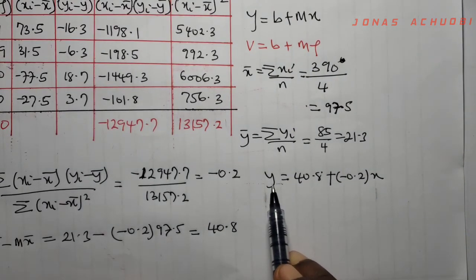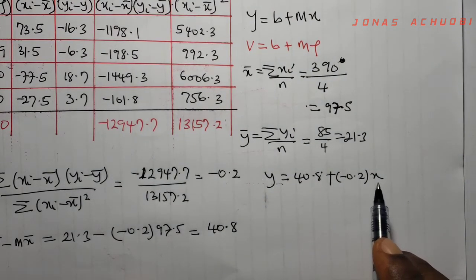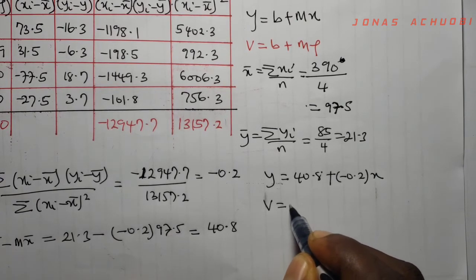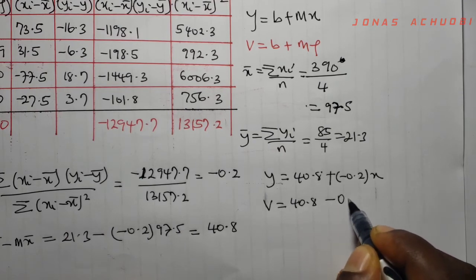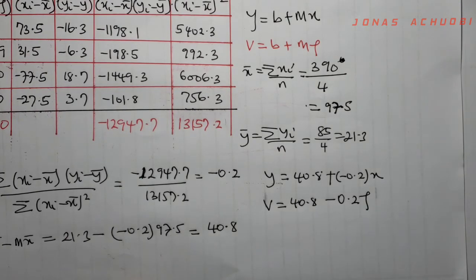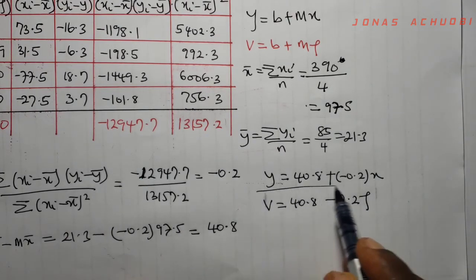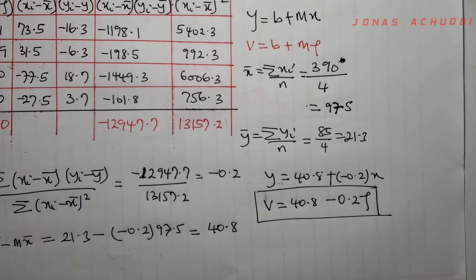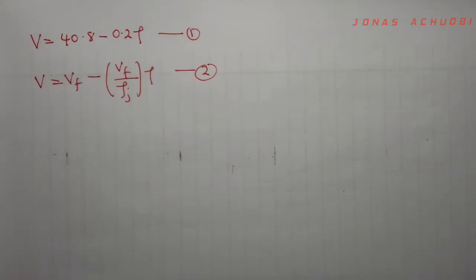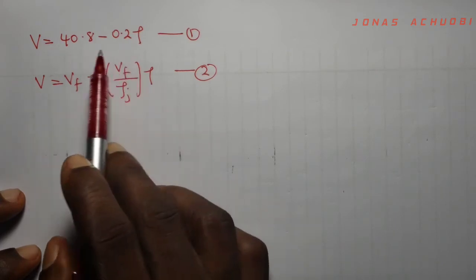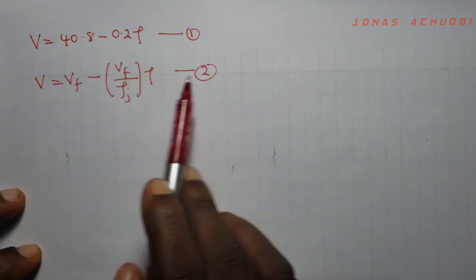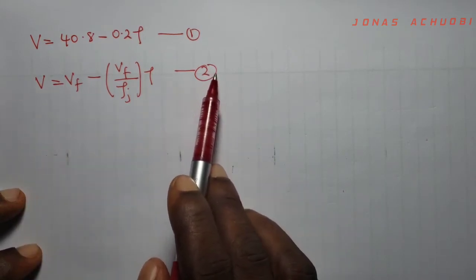So the fitted line to this data becomes y equal to 40.8 plus minus 0.2 times x. Since y represents the speed and x represents the density, our fitted line now becomes v equal to 40.8 minus 0.2 rho. So it is this fitted line now that we shall use to compare with the Green Shields model to answer the questions that follow.